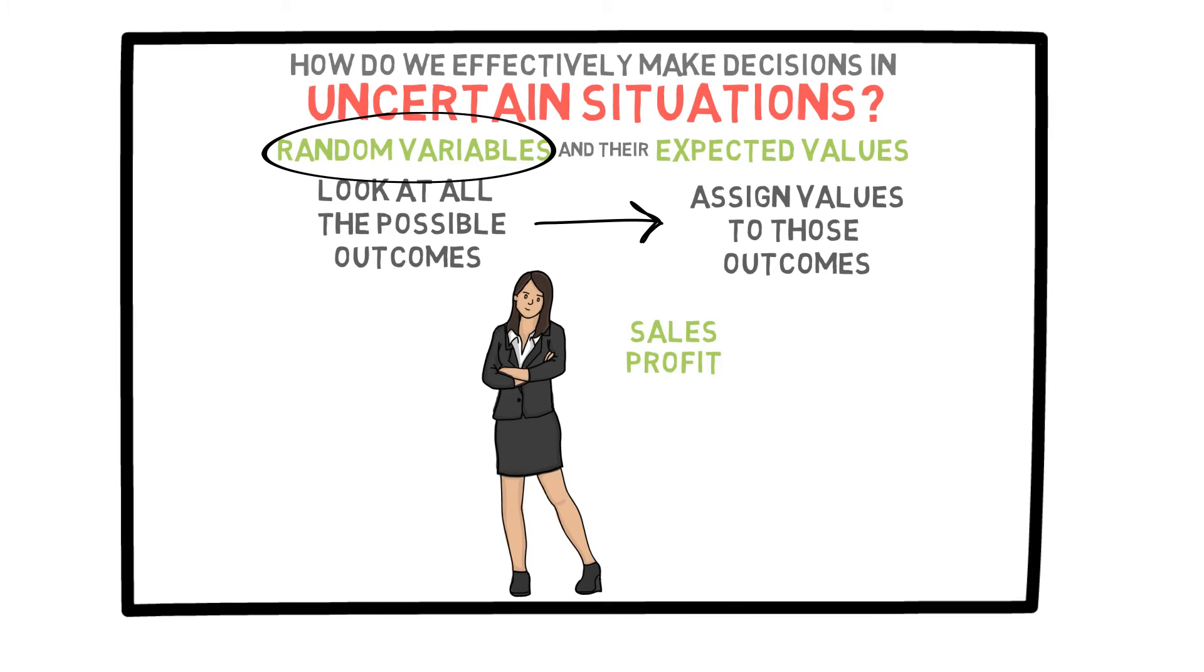We can call the sales and profits random variables y and z respectively. Random variables can be applied in many uncertain situations. Say you purchase stock in a company for $100 today and assign x to the price that stock will be tomorrow. Tomorrow, we get to observe x, which could be $102 or let's say $97.